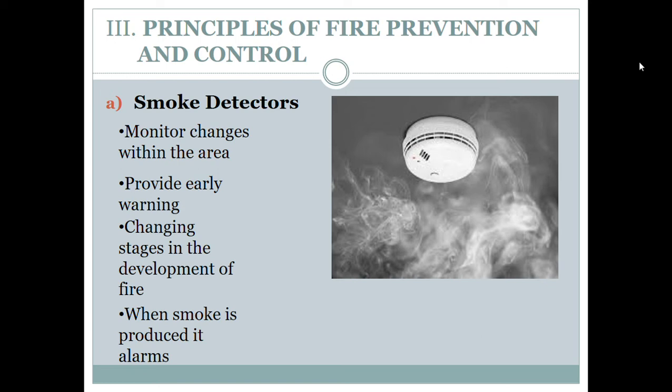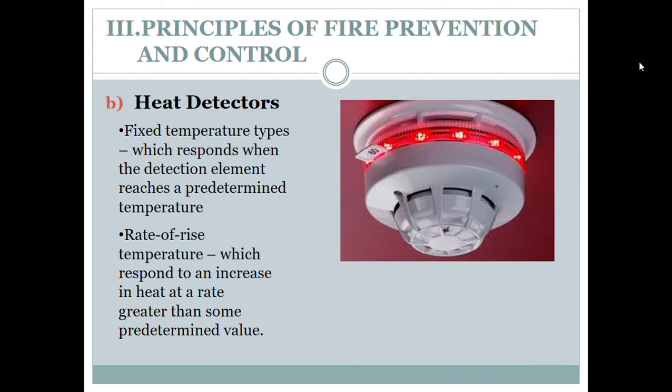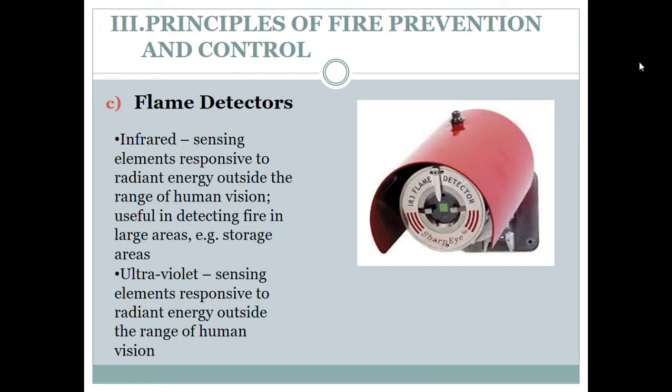Smoke detectors monitor changes within the area and provide early warning at changing stages in the development of fire — when smoke is produced, they alarm. Heat detectors have two types: fixed temperature types, which respond when the detection element reaches a determined temperature, and rate-of-rise types, which respond to an increase in heat at a rate greater than some predetermined value. Flame detectors include infrared and ultraviolet types; both sense elements responsive to radiant energy outside the range of human vision and are useful in detecting fire in large areas such as storage areas.